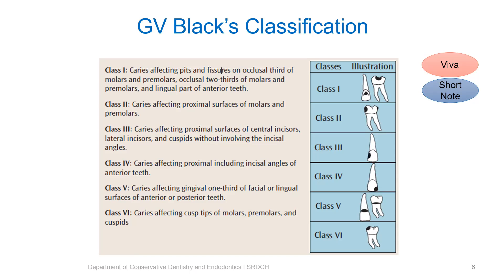Class 5 is caries affecting the gingival one-third of facial or lingual surfaces of anterior or posterior teeth. Class 6 is Simon's modification and it is caries affecting cusp tips of molars, premolars and cuspids, and the incisal edges.